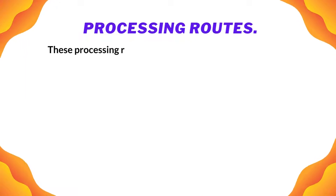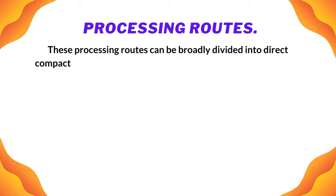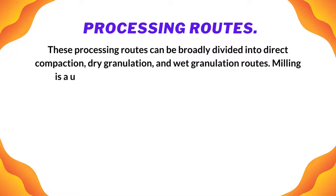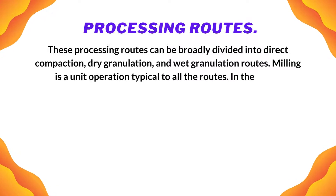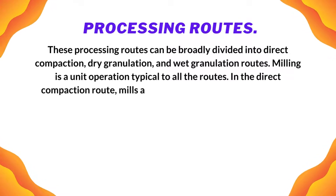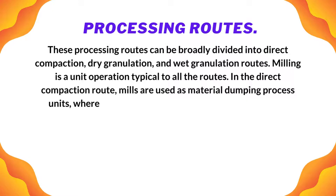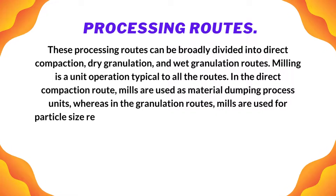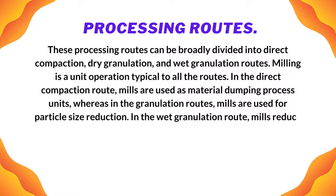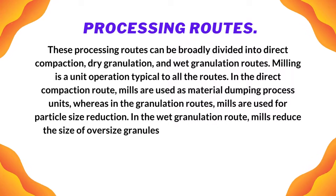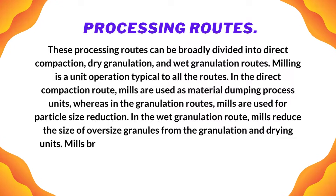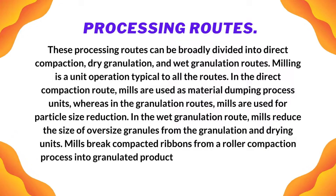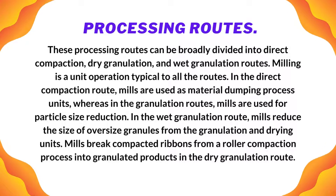These processing routes can be broadly divided into direct compaction, dry granulation, and wet granulation routes. Milling is a unit operation typical to all routes. In the direct compaction route, mills are used as material de-lumping process units. In the granulation routes, mills are used for particle size reduction. In the wet granulation route, mills reduce the size of oversize granules from the granulation and drying units. Mills break compacted ribbons from a roller compaction process into granulated products in the dry granulation route.